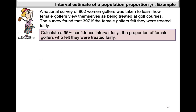The survey found that 397 of the female golfers felt they were treated fairly. We need to calculate a 95% confidence interval for P, the proportion of female golfers who felt they were treated fairly. We have a sample of 902, of which 397 said they were treated fairly, and we are calculating a 95% confidence interval, so our confidence coefficient will be 0.95.